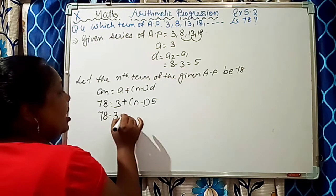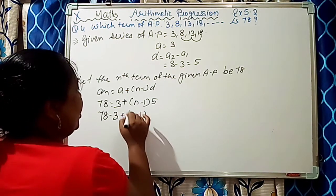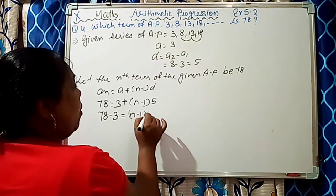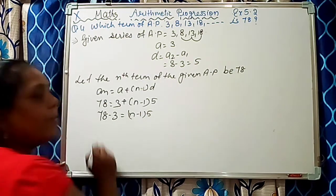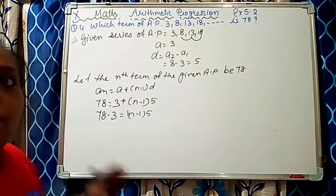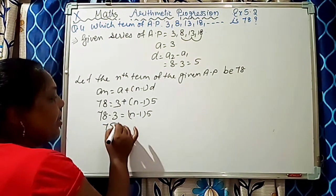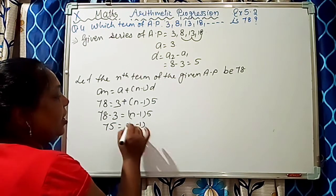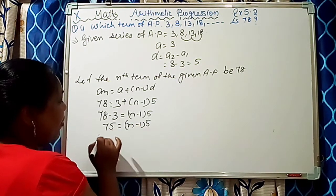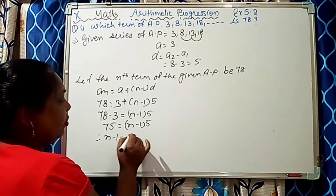78 equals 3 plus N minus 1 times 5. So 78 minus 3 means 75. 75 is equal to N minus 1 times 5. N minus 1 is equal to 15.